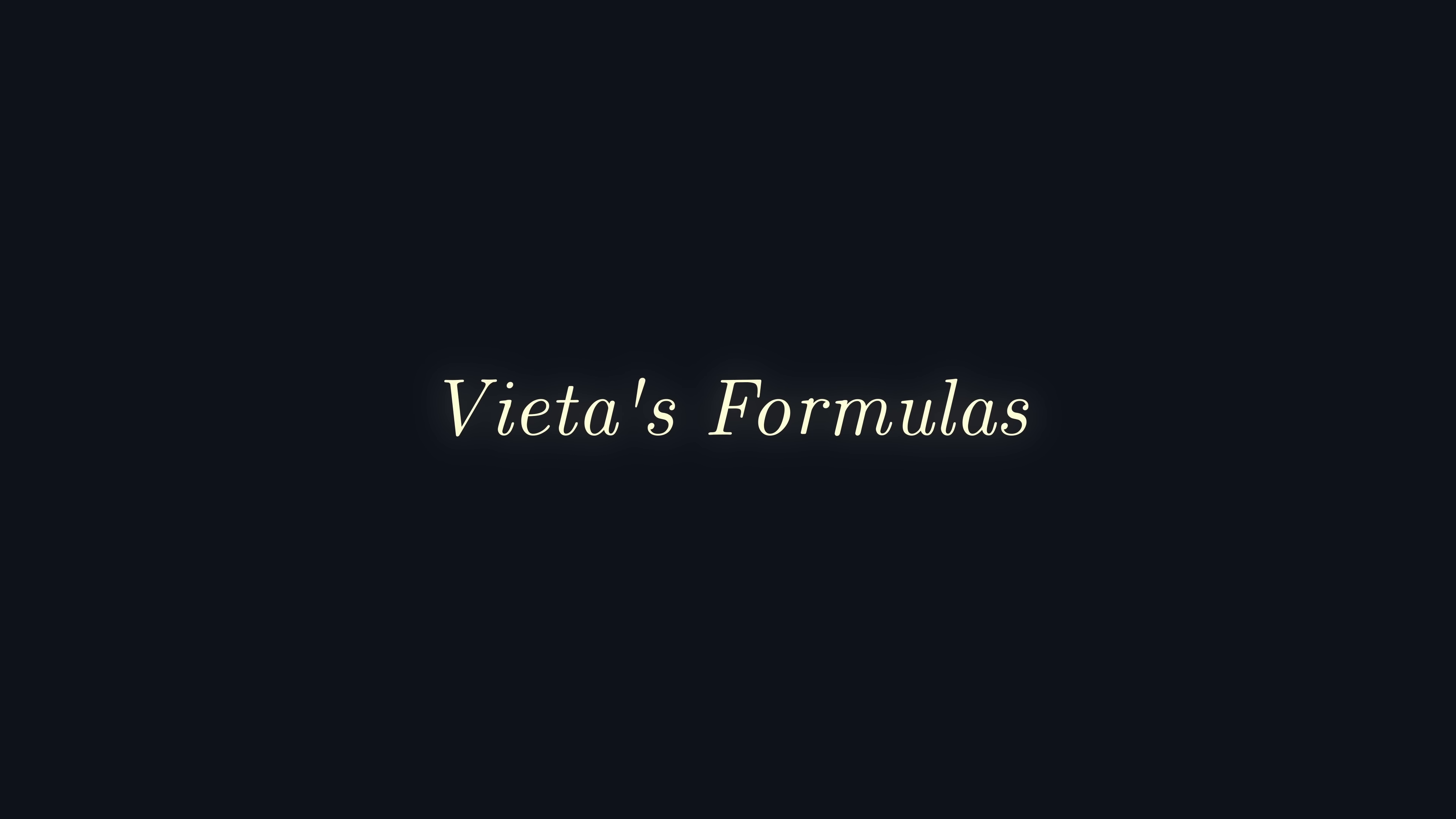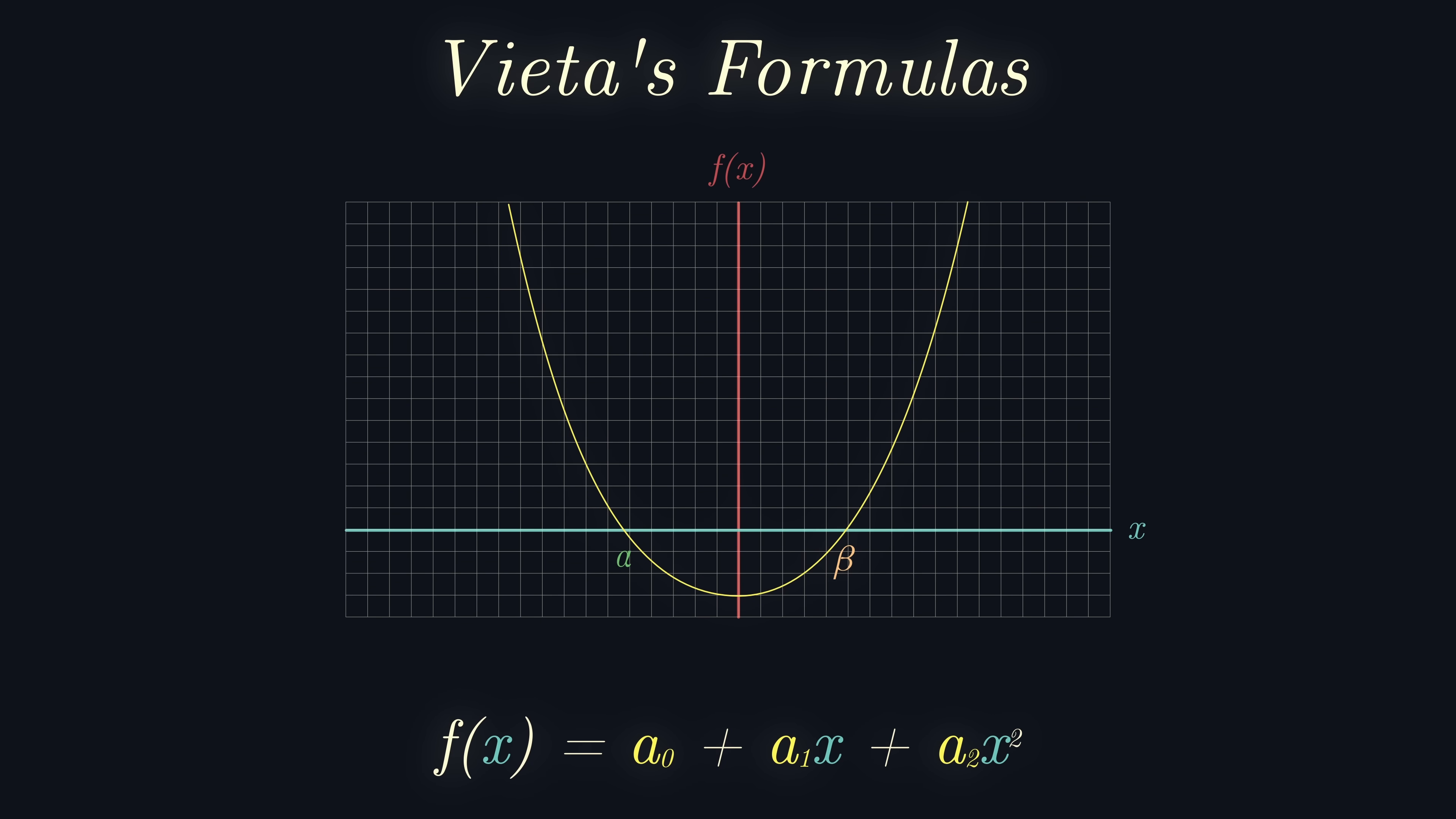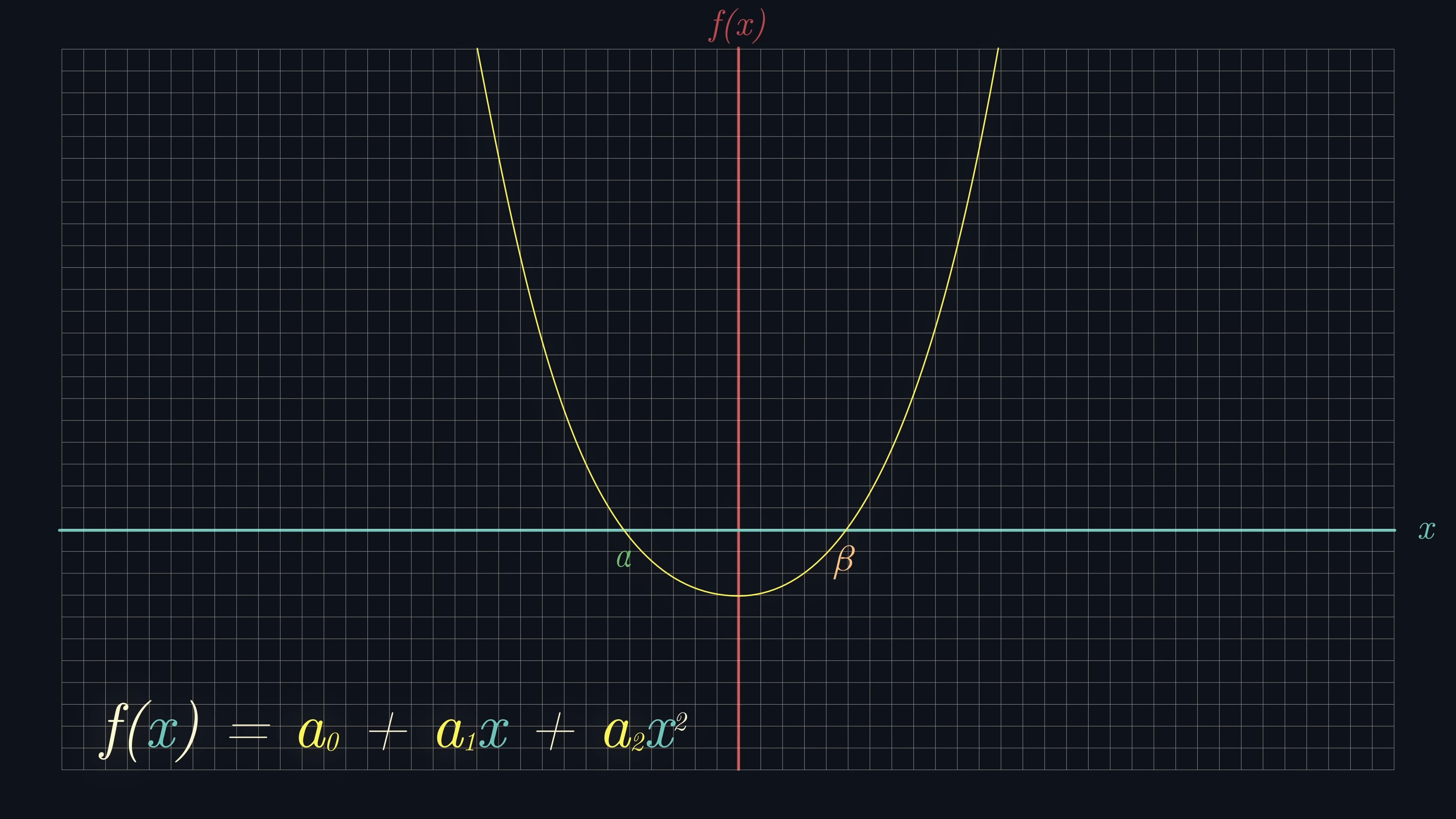Vieta's formulas are a set of equations which let us go from the roots of a polynomial to the coefficients of a polynomial. Let's start off with a quadratic polynomial, f of x.